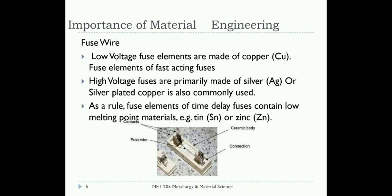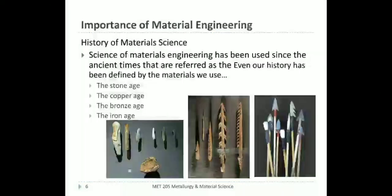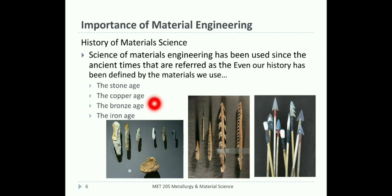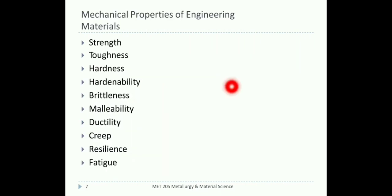Even when we learn our human history, we come to know that each ancient age was mentioned by the material that was being used during those times — the Stone Age, when humans started using stone as their main weapon; then the Copper Age; then the Bronze Age; then the Iron Age. Our history has been defined by the materials we used. The science of materials engineering has been used since ancient times.